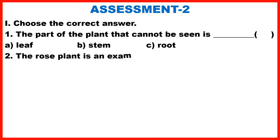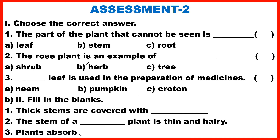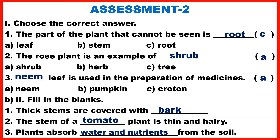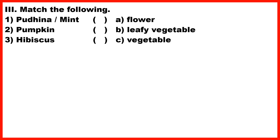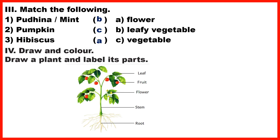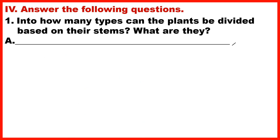Assessment 2: Section 1 – Choose the correct answer. Section 2 – Fill in the blanks. Section 3 – Match the following. Section 4 – Draw and colour; draw a plant and label its parts. Section 5 – Answer the following questions.